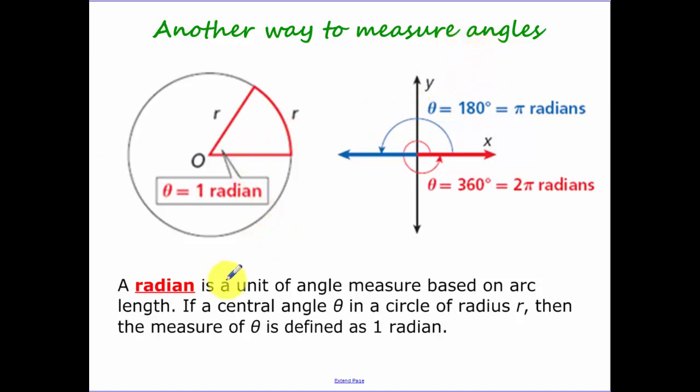So one radian is defined as this. When you have your radius being r, you have your radius being r, and if you take a piece of string and you wrap that around a circle that's also r, so all of these lengths are r, this angle theta in here is defined as one radian.